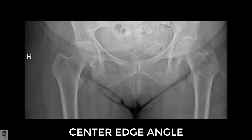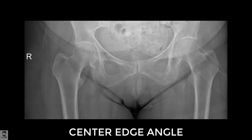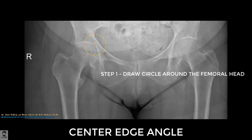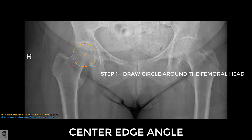Especially acetabular dysplasia. So without wasting any time, let's see how we measure. First, we need to draw a circle around the hip. This circle needs to correspond to the femoral head, so we move the circle there and adjust it.